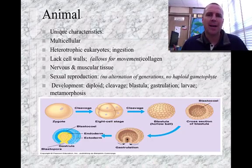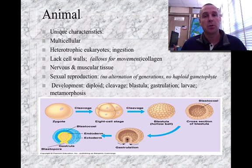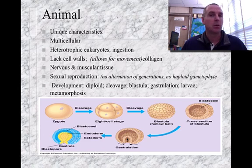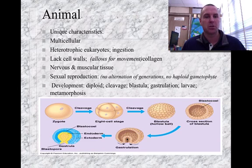When we talk about an animal, they have some very unique characteristics. They are all multicellular, heterotrophic eukaryotes, which means they have their own nucleus and other things. They get nutrition through ingestion — they take in nutrients and break them down inside their bodies. They do not have a cell wall; instead they have collagen that keeps their body held together, which allows for better movement. They have nervous and muscular tissue.